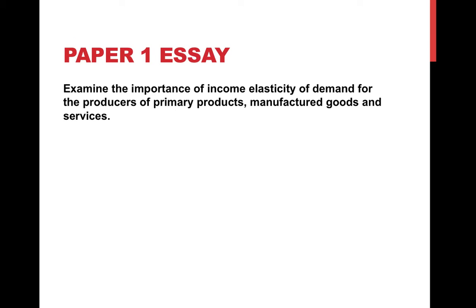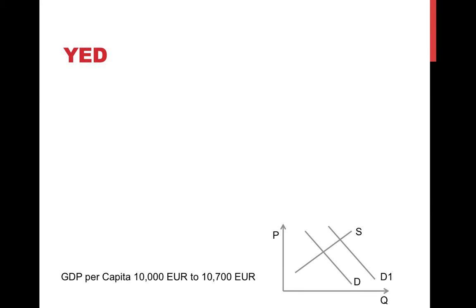The next concept is income elasticity of demand. The question is: examine the importance of income elasticity of demand for producers of primary products, manufactured goods, and services. YED is a measure of the responsiveness of a change in quantity demanded due to a change in income. The formula is percentage change in quantity demanded over percentage change in income. We're looking at the relationship between demand for a good or service and income.